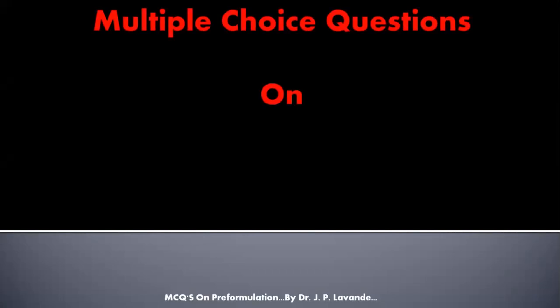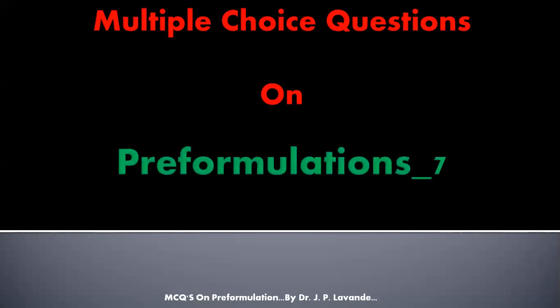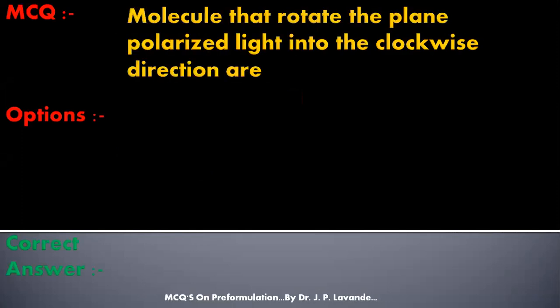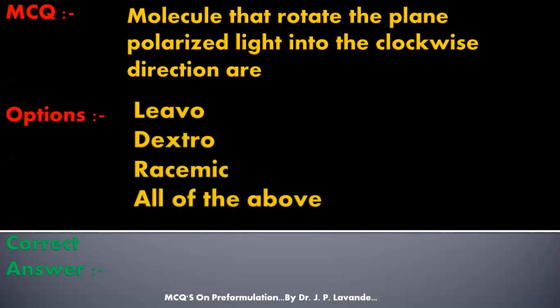Welcome viewers. Welcome to the multiple choice questions series on pre-formulation, Part 7. The first question: Molecules that rotate plane polarized light in the clockwise direction are called — options: Levo, Dextro, Racemic, All of the above. Correct answer is Dextro. Molecules that rotate plane polarized light in the clockwise direction are dextrorotatory.